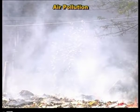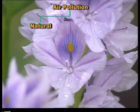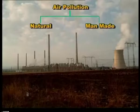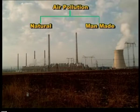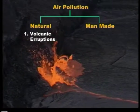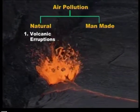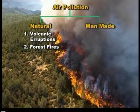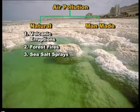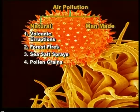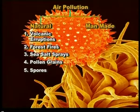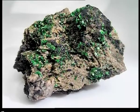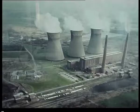Air pollution is chiefly classified as natural and man-made, that is anthropogenic. The natural sources include volcanic eruptions, forest fires, sea salt, spores, pollen grains and pores. Radioactive minerals present in the earth's crust are the sources of radioactivity in the air.